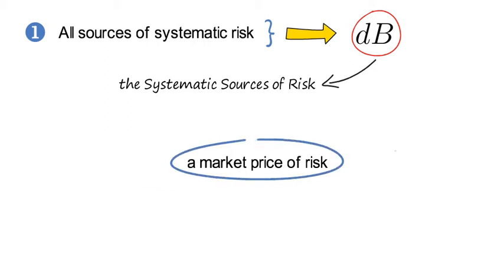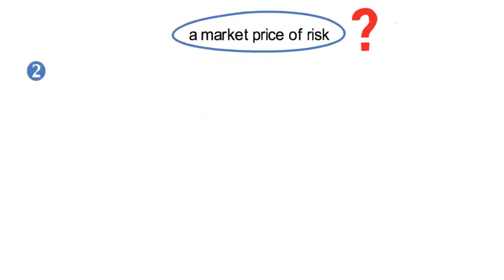So what is the market price of risk then? Well, that's my second economic insight. The market price of risk vector is lambda t.